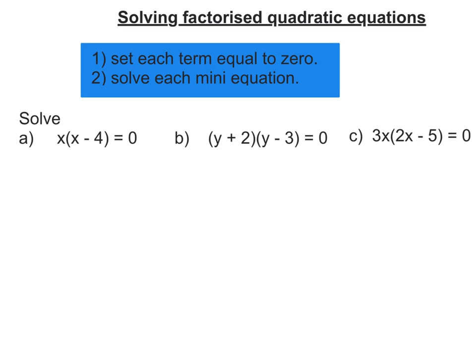In this video we're going to look at solving factorised quadratic equations. So the first one here we've got x brackets x minus 4 equals 0.